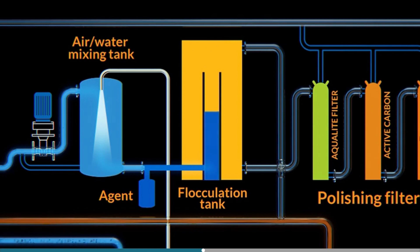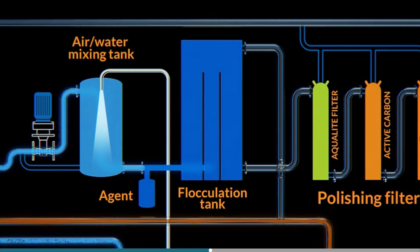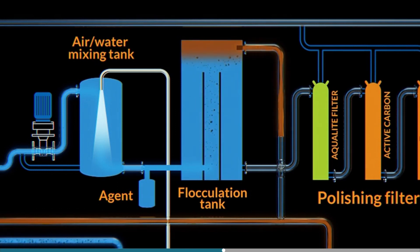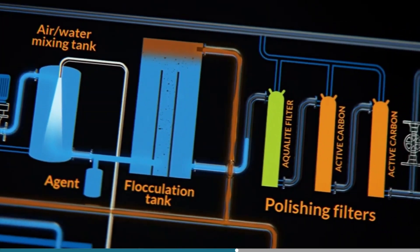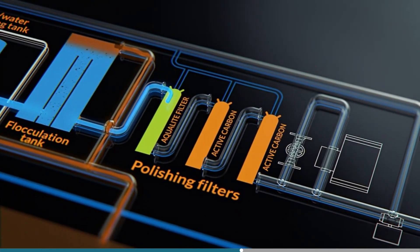When the aerated bilge water reaches the flocculation tank, the flocculation process starts. Due to all the air in the water, the flocks will float through a pipe in the centre to the top of the tank, where they are skimmed off and transferred to the sludge tank. Flocks mixed with sludge can then be incinerated. The partially treated bilge water now passes to the polishing filters. To ensure a constant ppm value well under 15 ppm, there are three filters fitted in line before the bilge alarm.